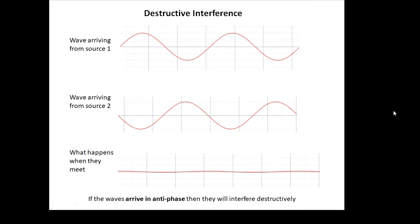Here, waves from source one and waves from source two are in anti-phase — they're doing the opposite. When one's up, the other one's down. When these two waves meet, they will cancel each other out and you get very little. If the waves arrive in anti-phase, then they interfere destructively — destructive interference.